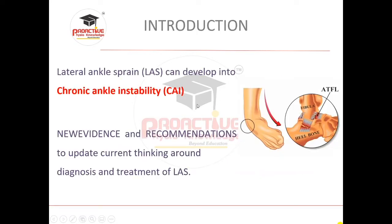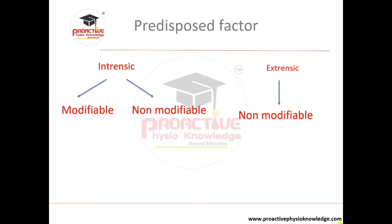There are new evidence and recommendations to update current thinking about diagnosis and treatment for lateral ankle sprain. Very few people convert into chronic ankle instability — those who do tend to have early return to sports or a lack of proper proprioception or strength. Let's look at the predisposing factors: there are two kinds — intrinsic and extrinsic.